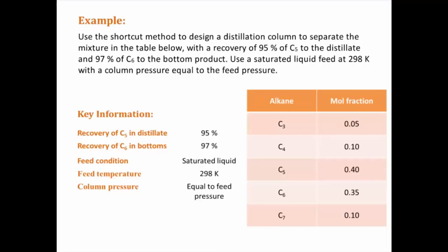we want to design a distillation column that separates a mixture of hydrocarbons. The specifications are that 90% of C5 should be recovered in the distillate product and that 97% of C6 should be recovered in the bottom product. The feed stream is a saturated liquid at 298 K and the column operates at atmospheric pressure.